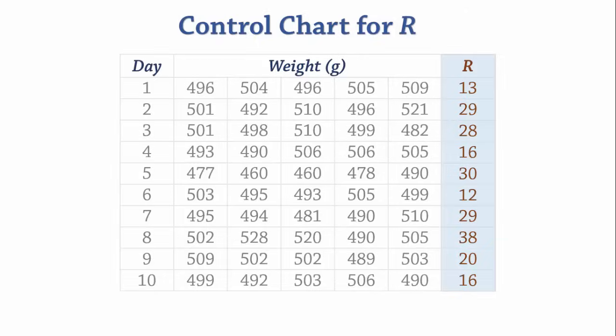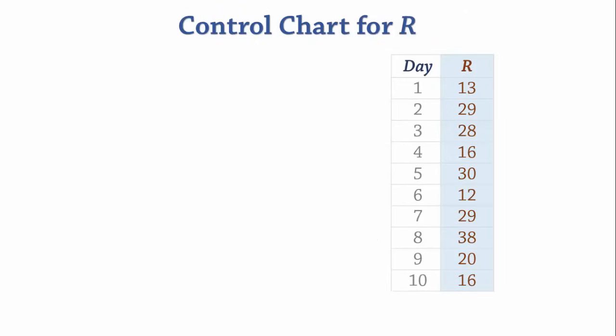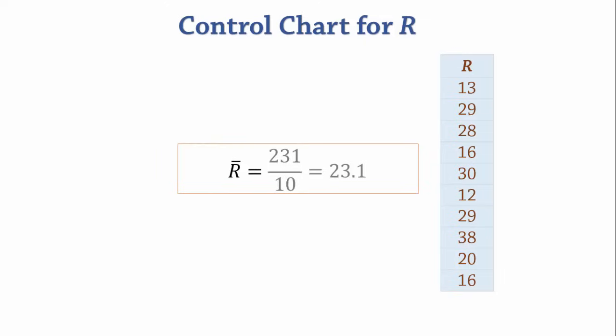Next, we calculate the center line R bar, i.e., the average of the ranges. The sum of the ranges is 231. Therefore, the mean of the ranges R bar is 231 divided by 10 which gives 23.1.